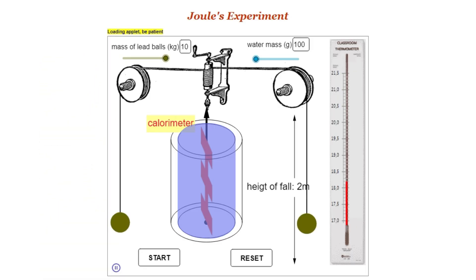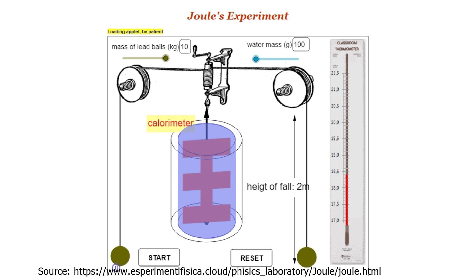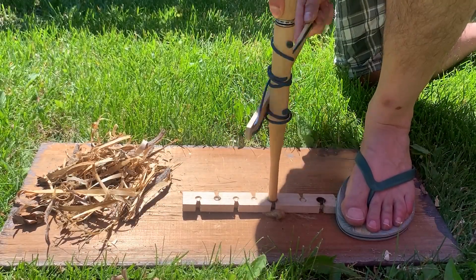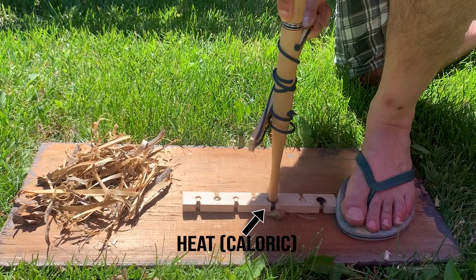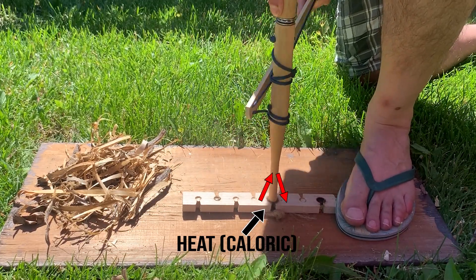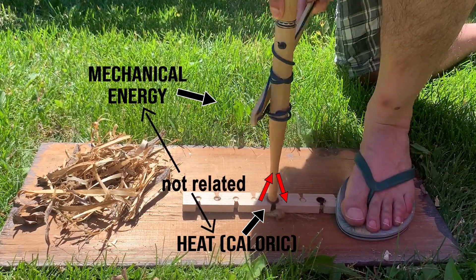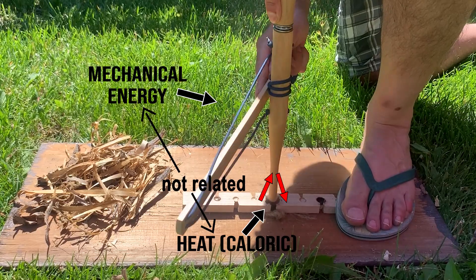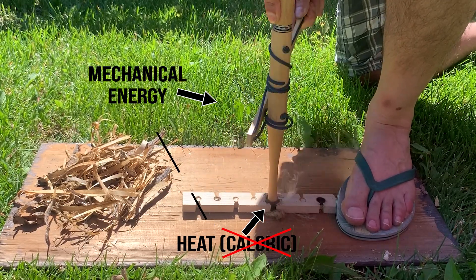He repeated this several times, measuring the water temperature before and after each run, and demonstrated that the heat produced in the water was equivalent to the energy released by the weights. This concept was groundbreaking. The accepted theory at that time was that heat was an invisible fluid called caloric that all materials contained. The fluid just traveled from one material to another, never being destroyed or created.